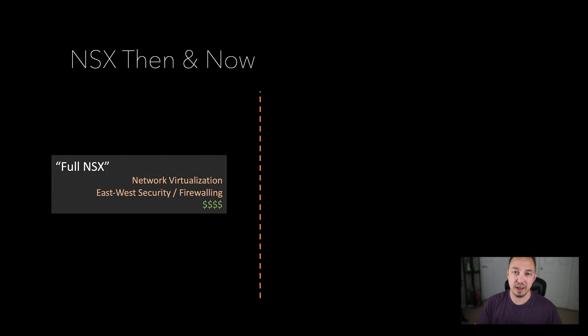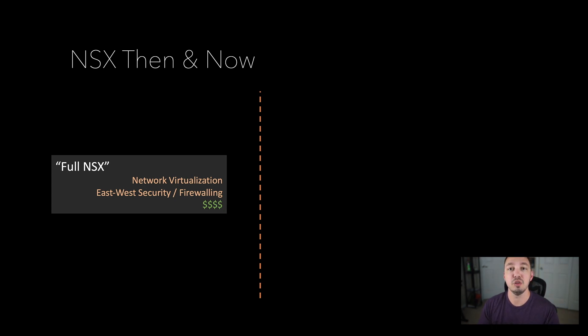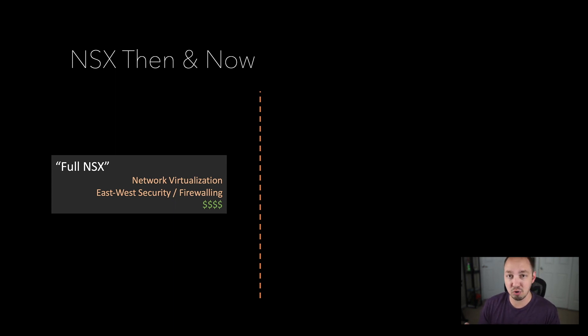Let's talk about how NSX was done before Service Defined Firewall and how we can consume it now with the Service Defined Firewall SKU. The old way of doing NSX was you had one SKU, which I would call full NSX — meaning you're doing network virtualization, distributed firewalling, and all of that. You basically have access to everything NSX has to offer. Now that sounds great until you see the price tag. It is pretty pricey, and I would argue the cost is worth it for customers that will use all of the functionality NSX has to offer.